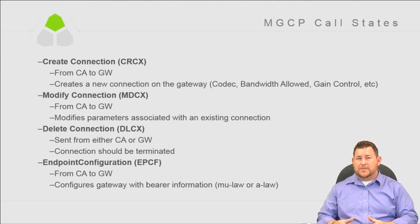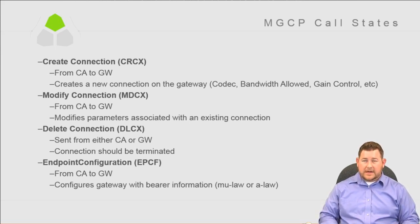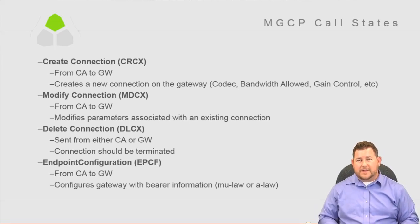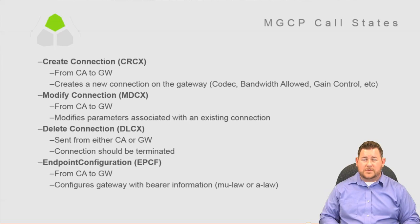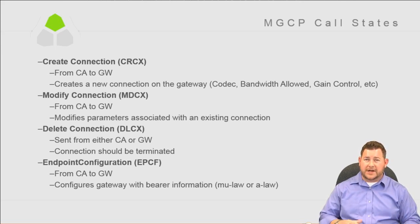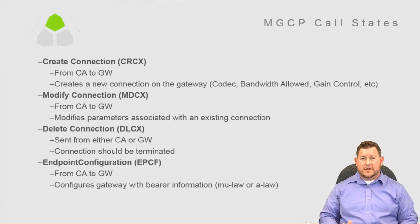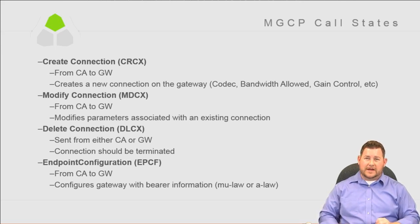The CRCX message happens from Communications Manager to the gateway. The Modify Connection, MDCX, is also from the call agent to the gateway and modifies parameters of an existing connection. Delete Connection, DLCX, can be sent from either the call agent or the gateway — the gateway can delete a connection because it's making the physical connection, but the call agent can also do it because the user can hang up. So DLCX can come from either direction depending on where the call was terminated.